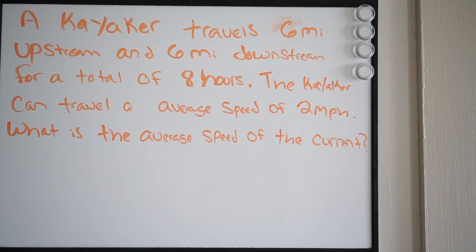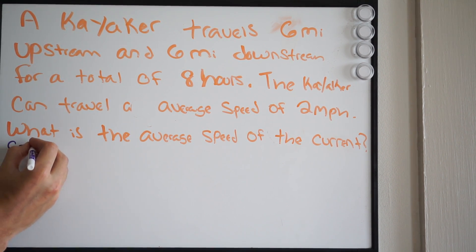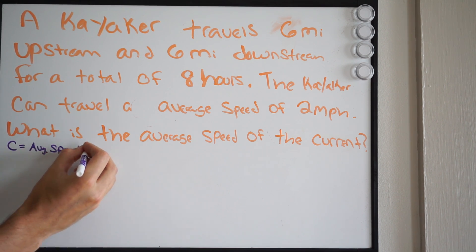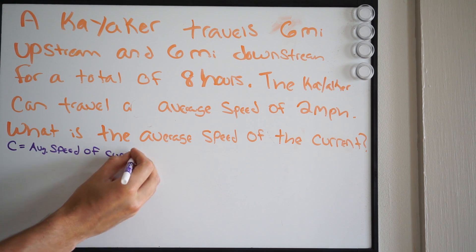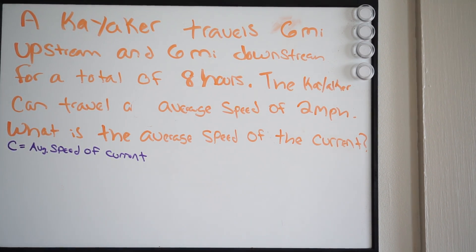There's a lot of information there. What they're trying to find is the speed of the current, so let's go ahead and make that known. I'm going to assign that a variable: C equals average speed of current. C is what we're trying to find. Since we're dealing with rational equations, it's safe to say this is going to be involving rational equations.